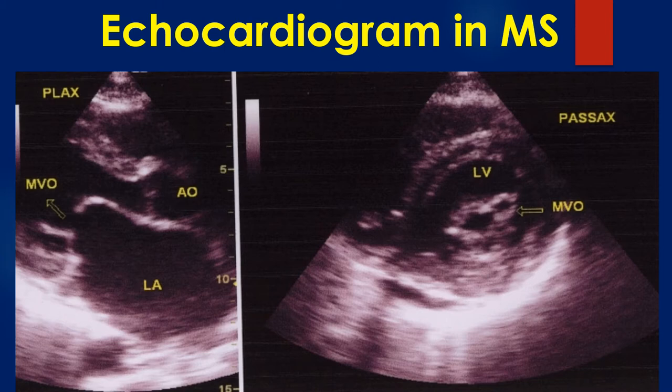The parasternal short axis view is used for quantitating the severity of mitral stenosis by using planimetry to measure the mitral valve orifice area. Commissural fusion and calcification, if present, can be seen well on the parasternal short axis view.